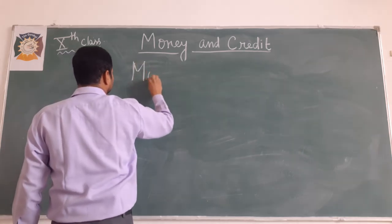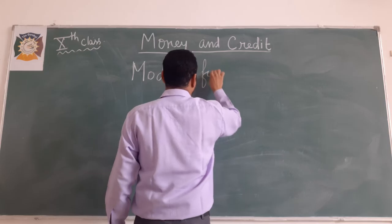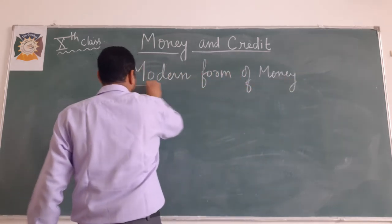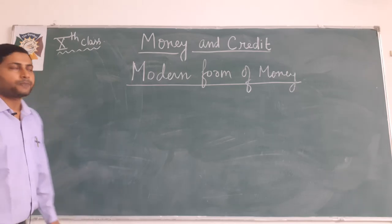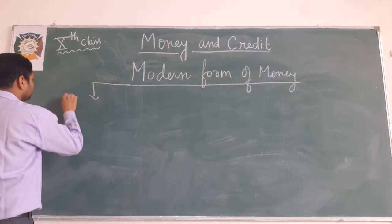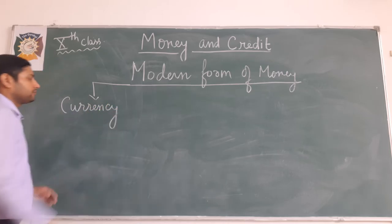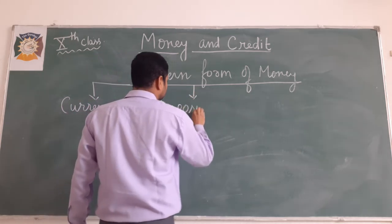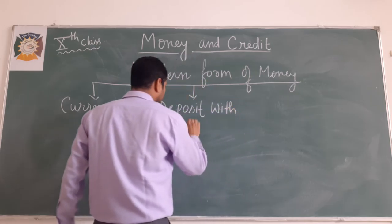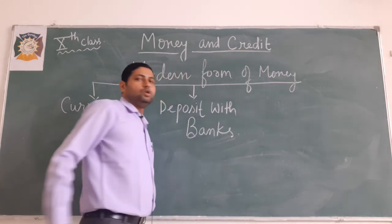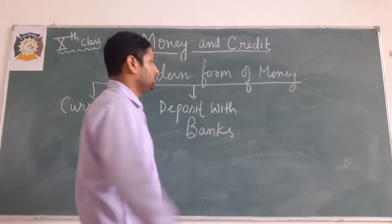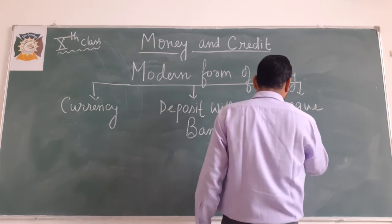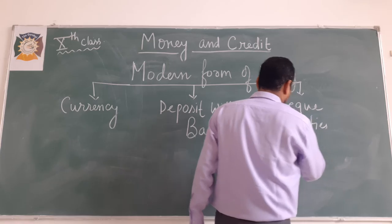That is why in modern form of money, we divide this category basically into three parts. The very first part is currency. The second is deposit with banks. And the third form is cheque facilities, which are used for transactions.